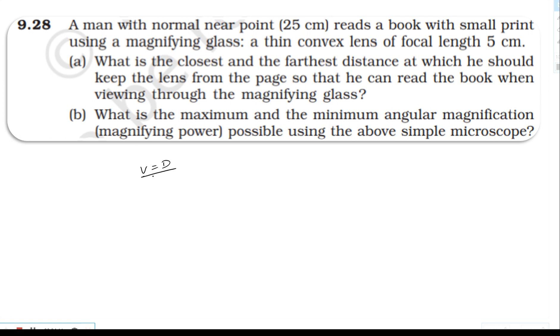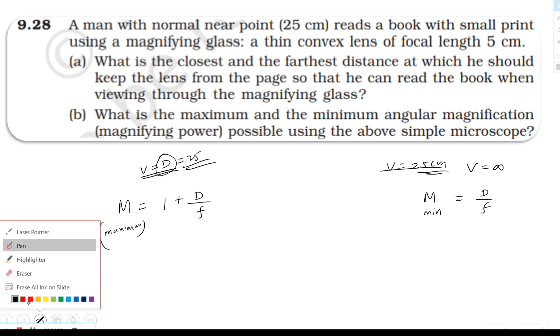The maximum magnifying power is when the image forms at the near point. Maximum magnifying power is one plus D by f, where D is 25 centimeter and f is 5. So maximum magnifying power equals one plus 25 by 5, which is one plus five equals six.